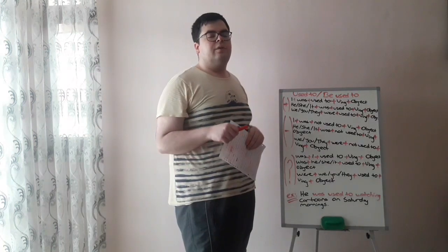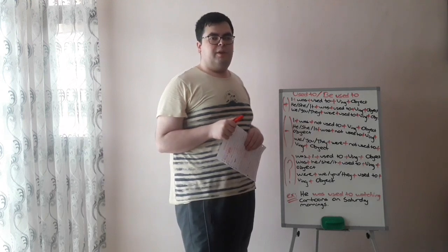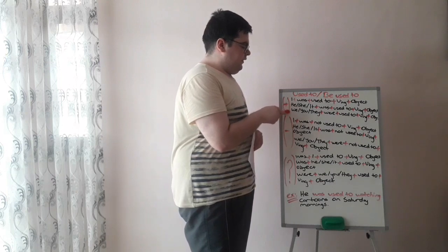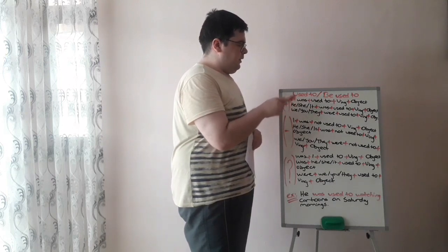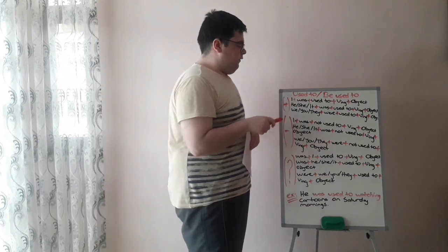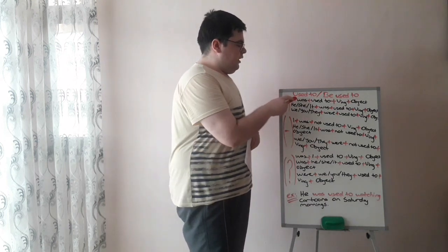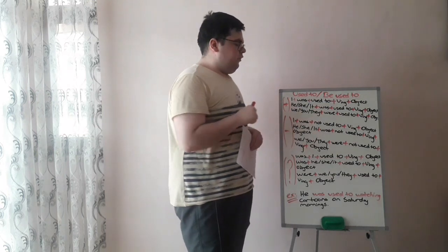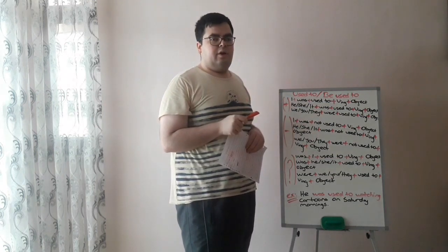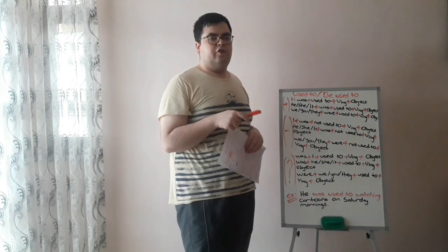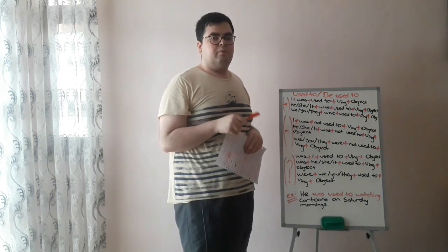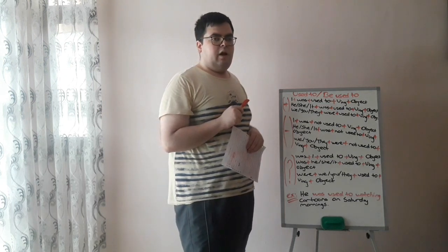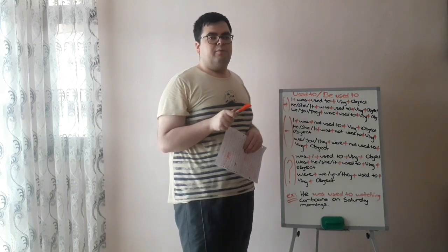Let's continue. In this part of the lesson, we will learn be used to in past forms. If we want to create a positive sentence using be used to in past forms, we conjugate be into was or were. For singular pronouns — I, he, she, or it — we put was. For plural pronouns — we, you, they — we put were.